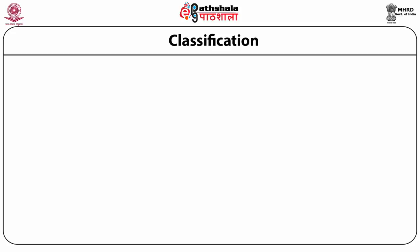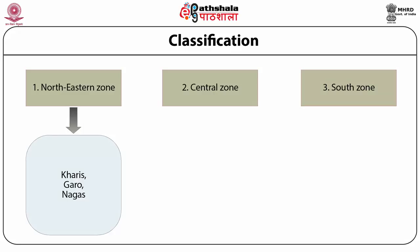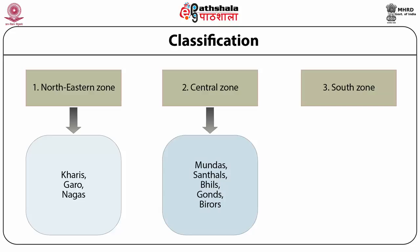Tribes are scattered all over India, but they are mainly classified into three zones: the northeastern zone, the central zone, and the south zone. In the northeastern zone, there are Khasis, Garos, Nagas, and many others. In the central-eastern zone, you find tribes like Mundas, Santals, Bheels, Gondes, and Birhors. And in the south zone, you find tribes like Chenchus, Todas, Irulas, etc.